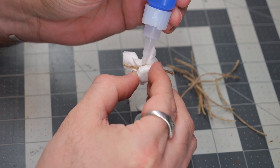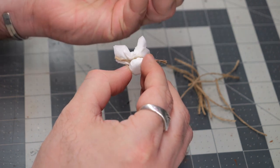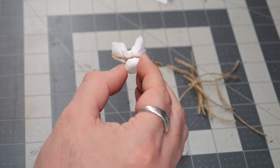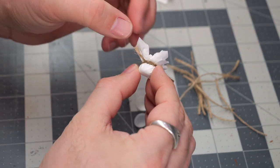So to secure the twine in place, I do just a little drop of super glue on the knot, and that will hold it in place and bond it to the napkin.